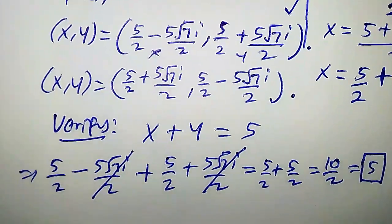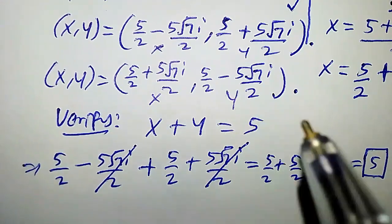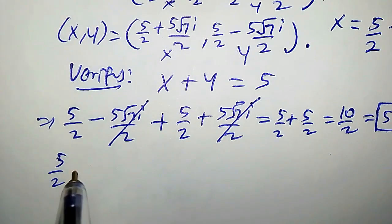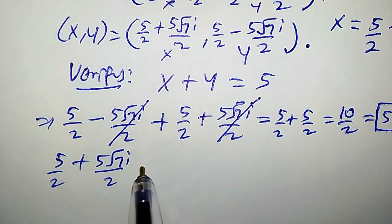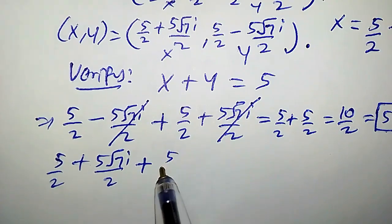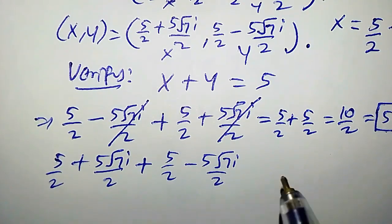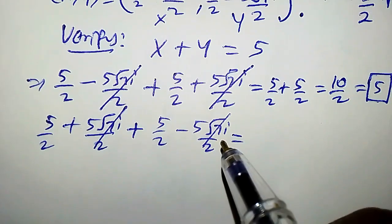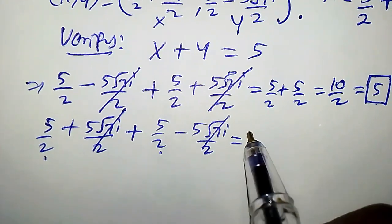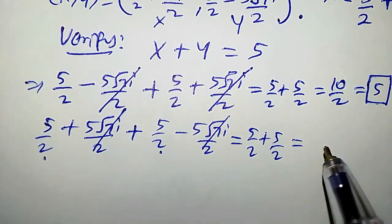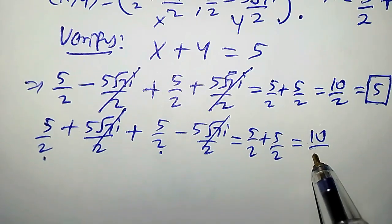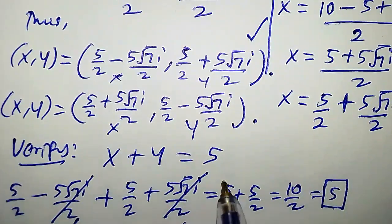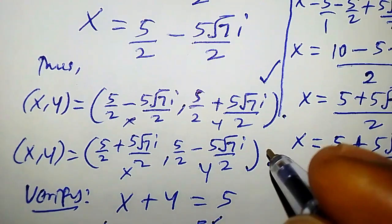Let us verify the second solution. Plugging x equals 5 over 2 plus 5 root 7i over 2 and y equals 5 over 2 minus 5 root 7i over 2 into the left hand side: the terms 5 root 7i over 2 and minus 5 root 7i over 2 cancel to zero, leaving 5 over 2 plus 5 over 2, which equals 10 over 2, that is also 5. This is exactly what we have on the right hand side, so the second solution is also correct.